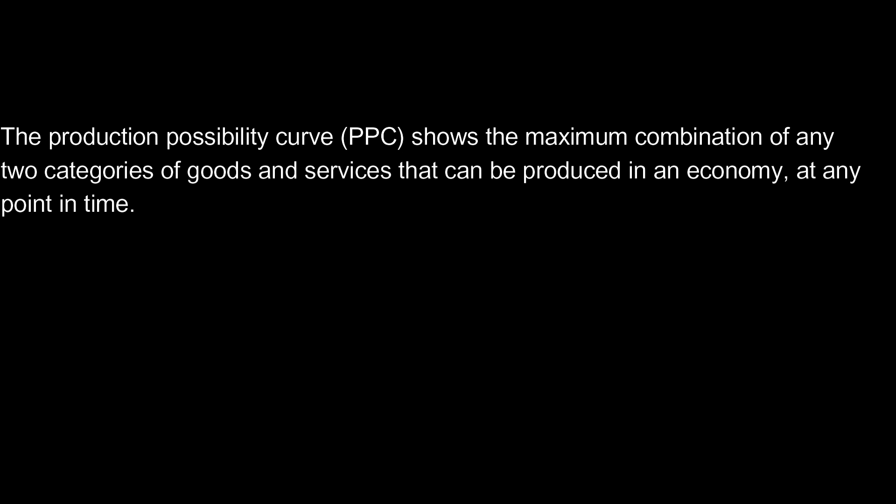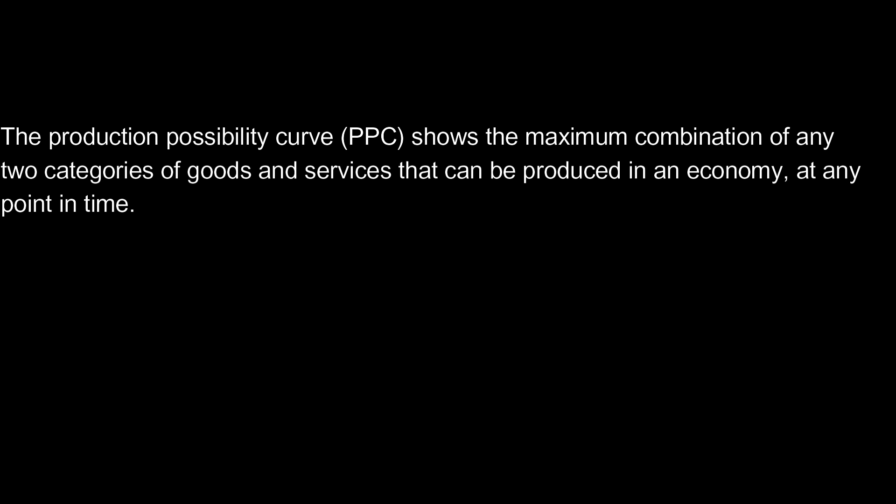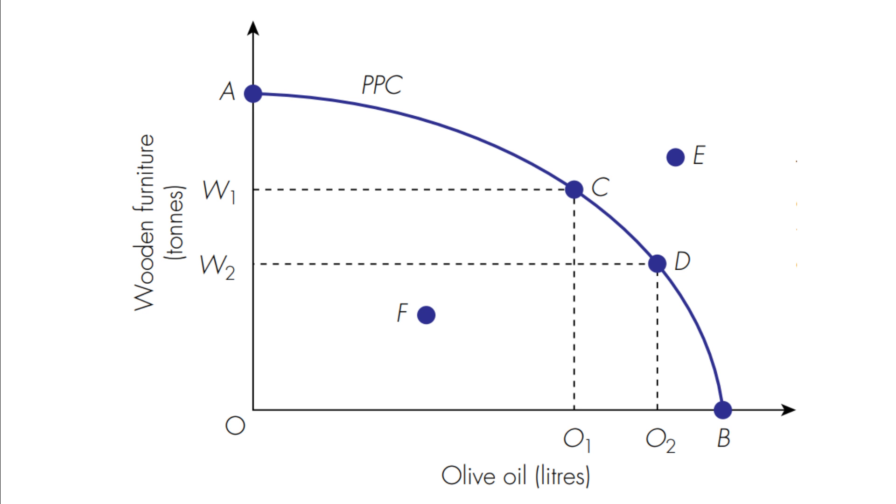Let's start off with the PPC curve. The production possibility curve diagram shows the maximum combination of any two categories of goods and services that can be produced in an economy at any point in time. Essentially, it just shows the productive capacity of the economy.